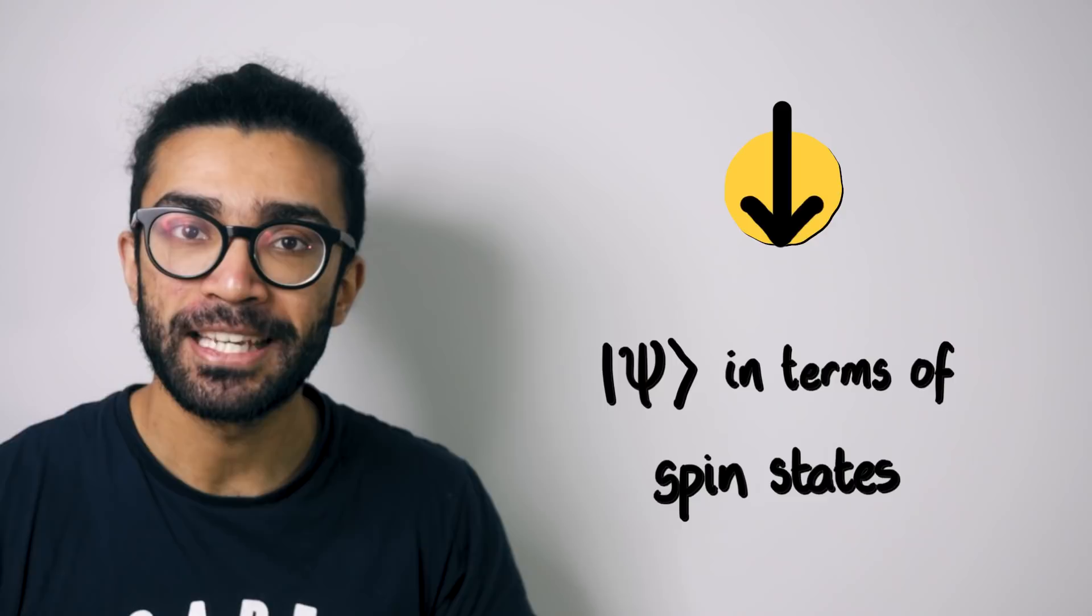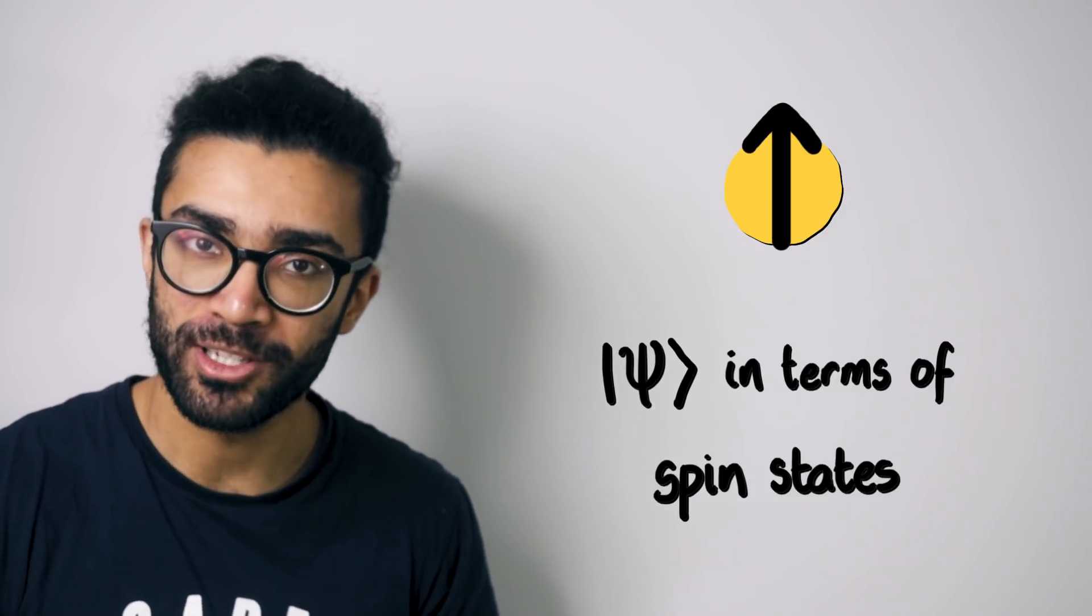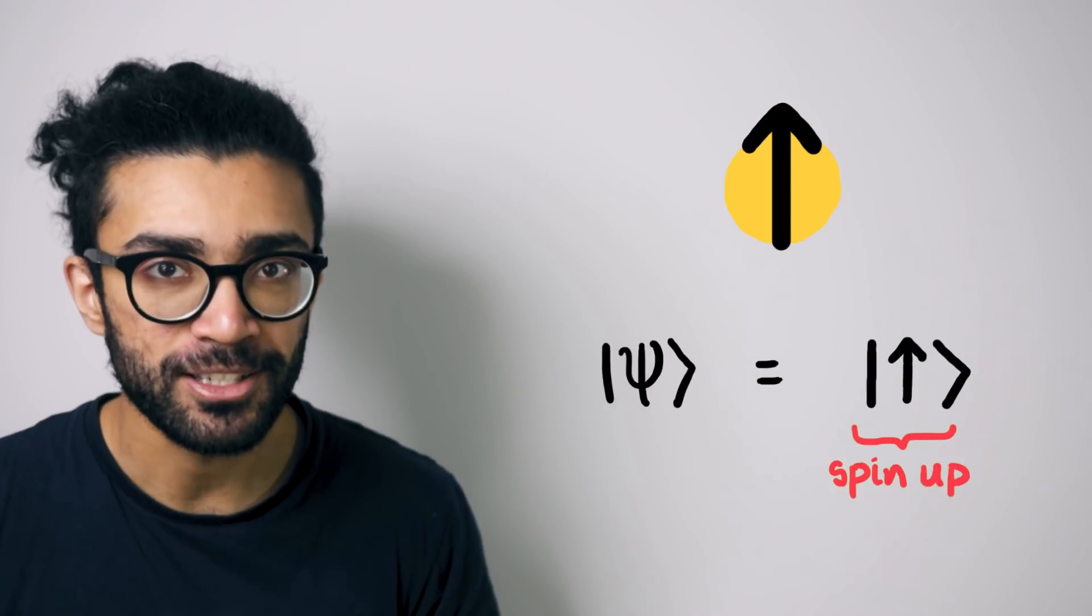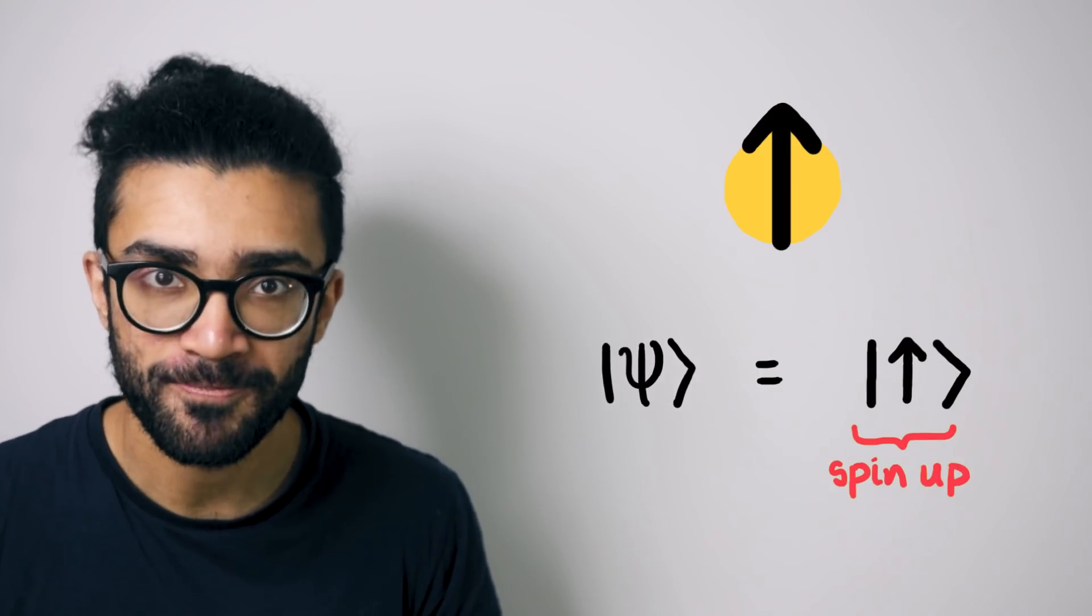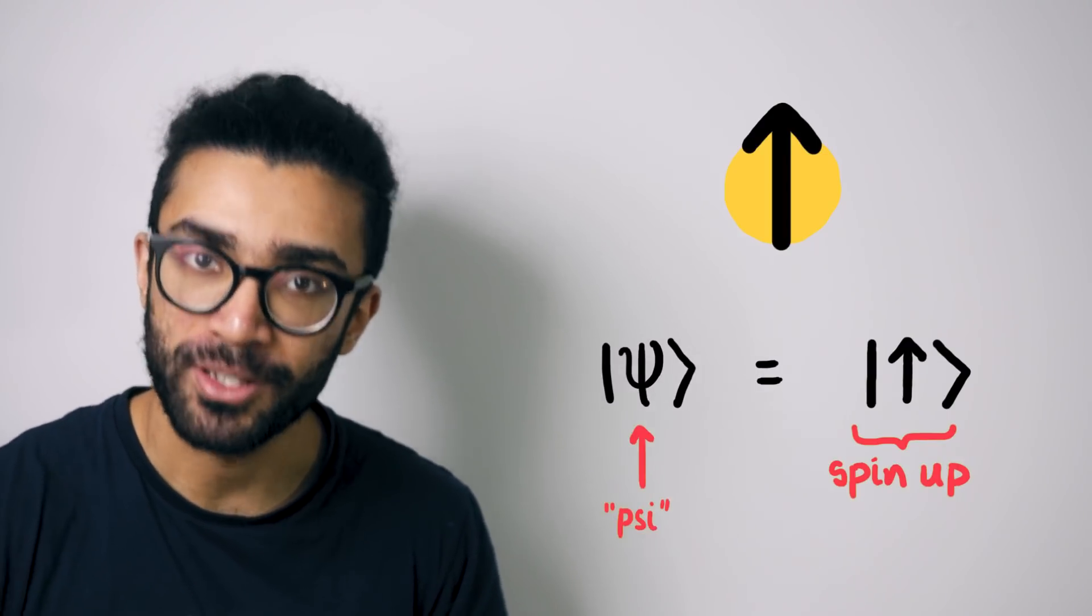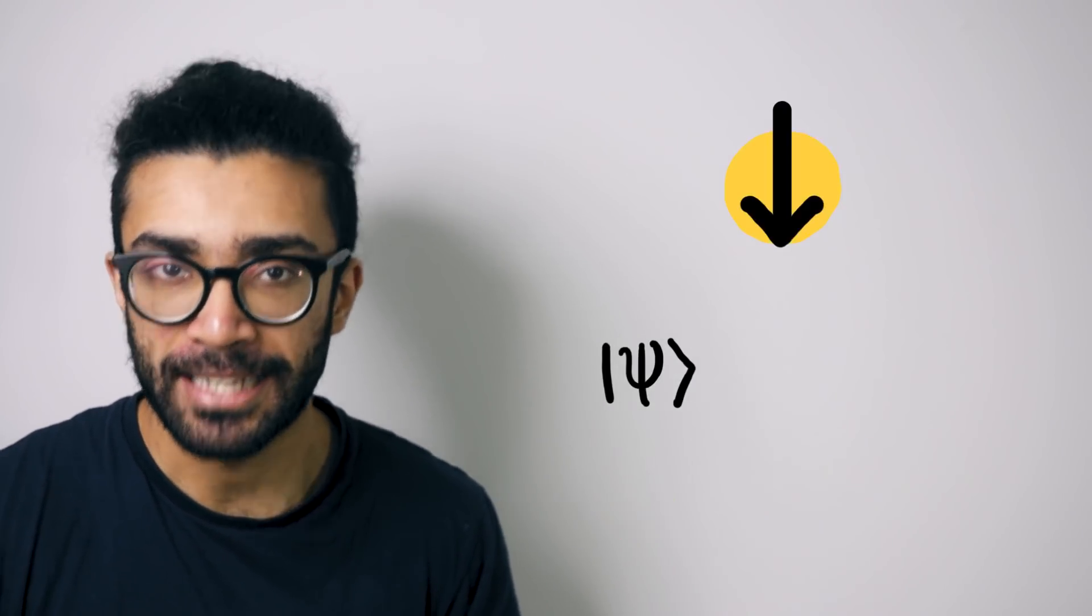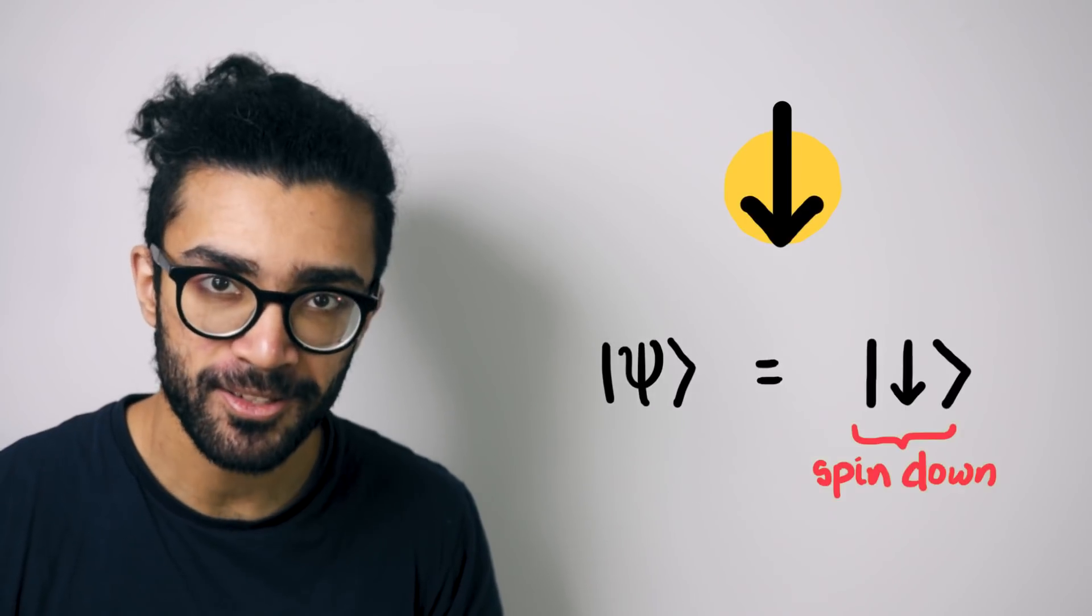So if our electron happens to be in the spin up state when we measure its spin, then its wave function can be written like this. This is representing the spin up state. And of course we commonly use the Greek letter psi to represent the wave function. And if we know that our electron is in the spin down state, then we can write its wave function like this.